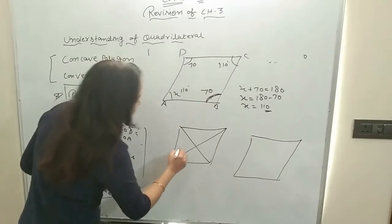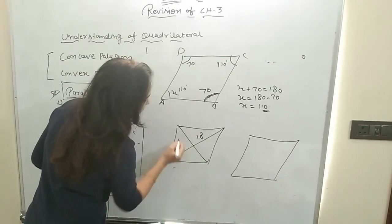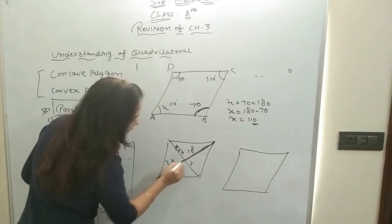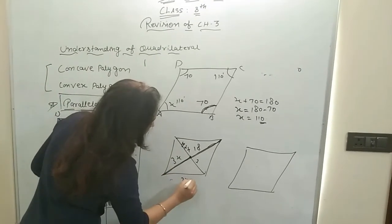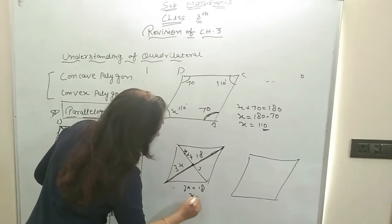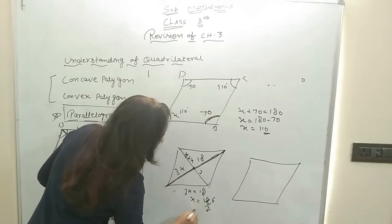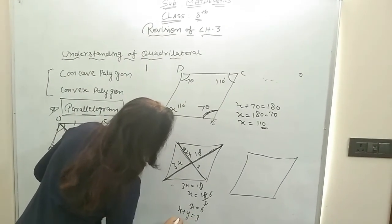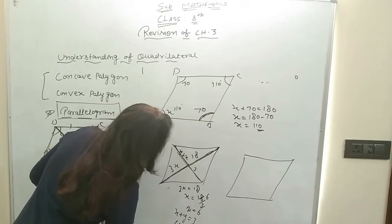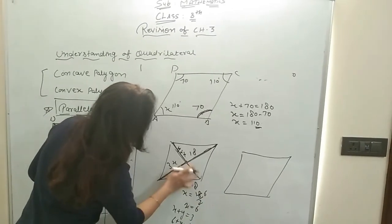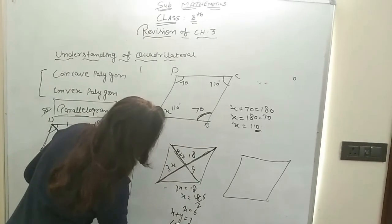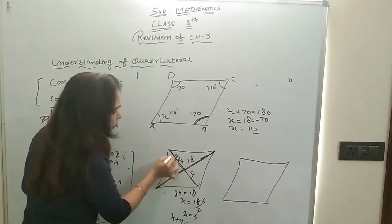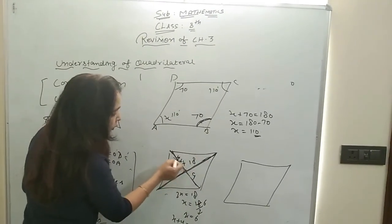Next type of question: suppose the diagonal values given are 3X and 18, and here Y plus X equals 3. You know that diagonals bisect each other, so 3X will be equal to 18, and from here you can find X equals 18/3, so X equals 6. And since the other segments are equal, X plus Y is given as 3. But if X is 6, then to avoid a negative value, take 9 instead: Y equals 9 minus 6, so Y equals 3. By using the property of diagonals, you can easily find the value of X and Y.